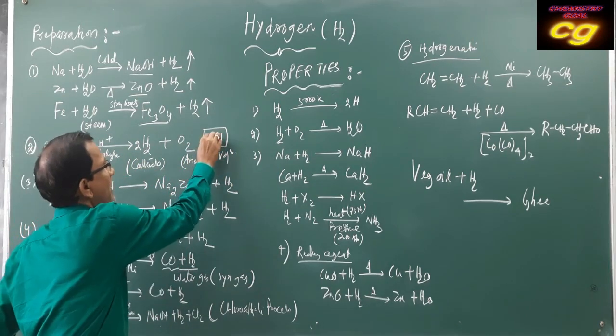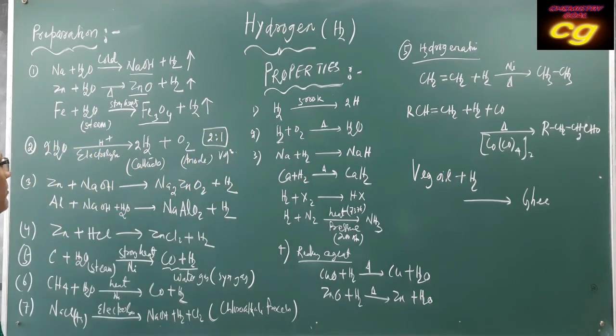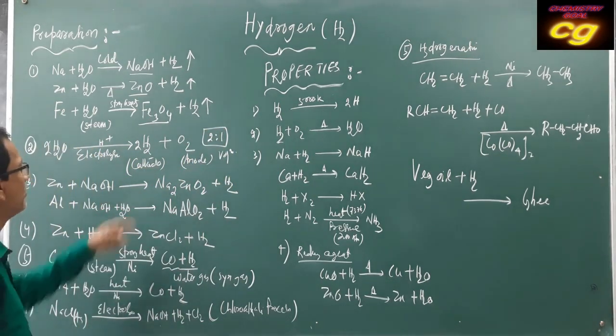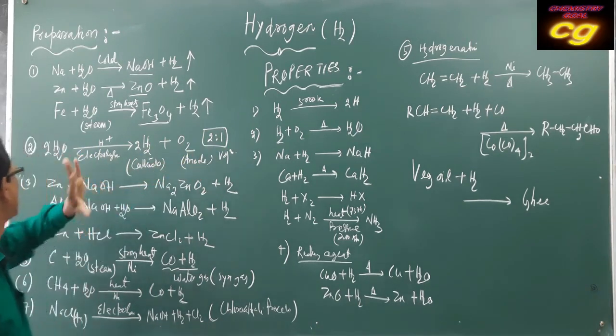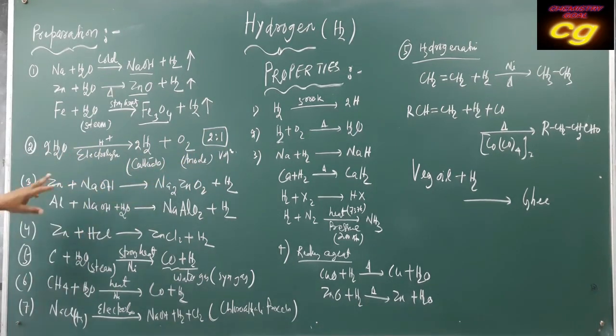The mass ratio of hydrogen to oxygen is 1:1, but the volume ratio is 2:1. That is an important feature of hydrogen gas preparation.